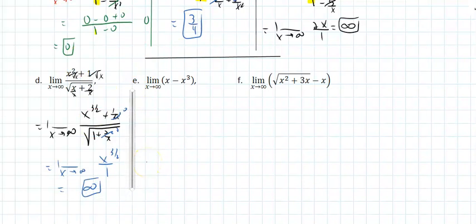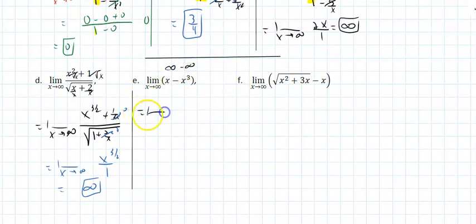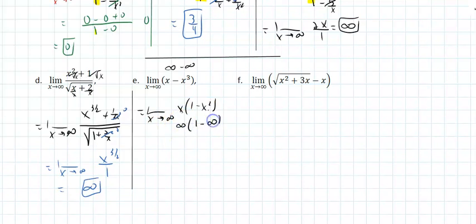Here, as x approaches infinity, there's no fraction — it's really infinity minus infinity, which is an indeterminate form. What I can do is factor an x out. As x approaches infinity, that becomes infinity times 1 minus infinity, and 1 minus infinity is negative infinity. Think of a very large number times a very large negative number — that's going to be negative infinity.